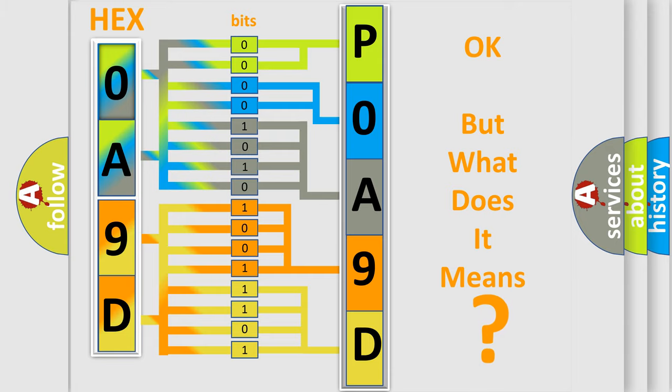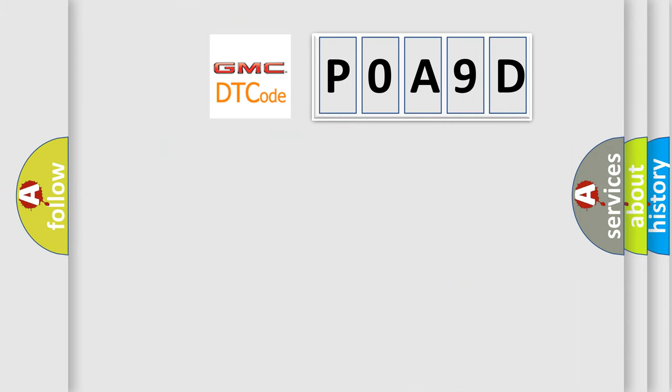So, what does the Diagnostic Trouble Code P0A9D interpret specifically for GMC car manufacturers?